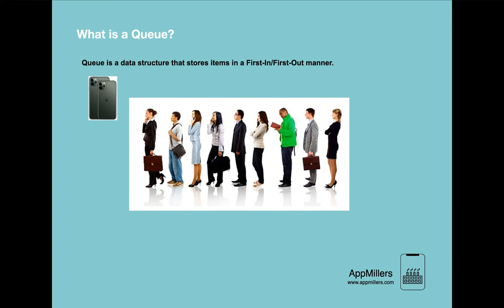Here we see a bunch of people forming a queue to buy a new iPhone from an Apple Store. The queue data structure is very similar to this real-life queue. The first feature is that if someone wants to buy a new iPhone, he or she has to join the end of the queue — they cannot join from the beginning or the middle. A new addition to this queue always happens at the end.